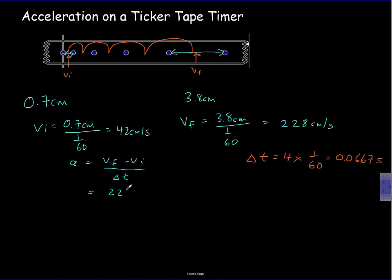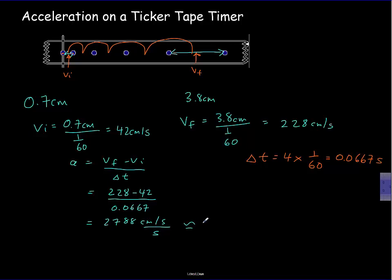Substituting in: (228 − 42) ÷ 0.0667 works out to approximately 2788 centimeters per second of speed gained every second, which we round to 2800 centimeters per second squared.